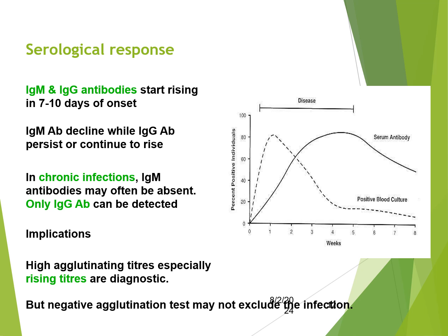In chronic infections, IgM antibodies may often be absent and only IgG antibodies can be detected. A high agglutination titre, especially rising titres, is diagnostic, but a negative agglutination test cannot exclude the infection.